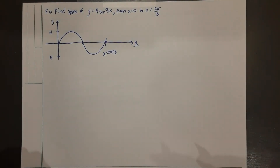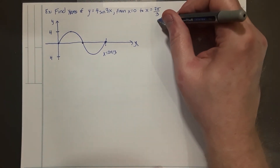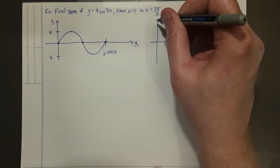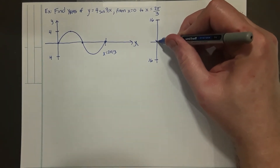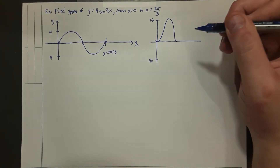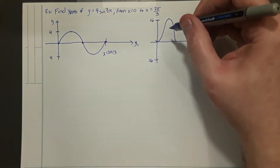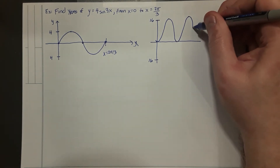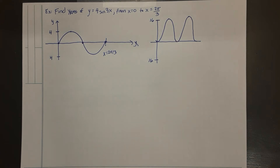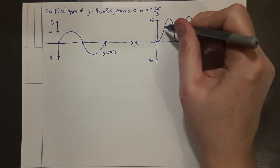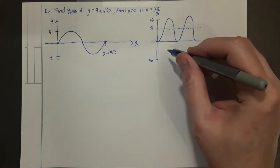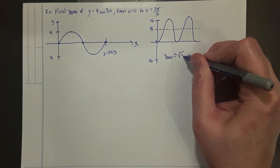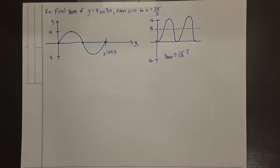If we wanted to estimate the RMS value, it has to be between 0 and 4, since we're effectively ignoring negative deviations. Squaring the function takes the amplitude up to 16, since 4 squared is 16. The squared sinusoidal variation reaches a maximum of 16, and because the negatives are squared they also become positive, giving a sinusoidal variation shifted up with twice the frequency. The average of that should be about 8, and taking the square root of 8 turns out to be exactly the result.